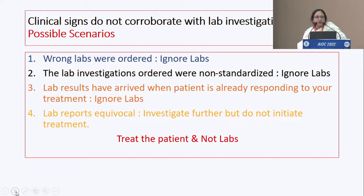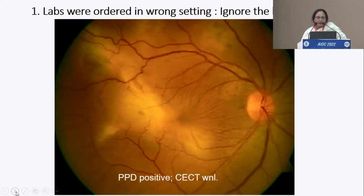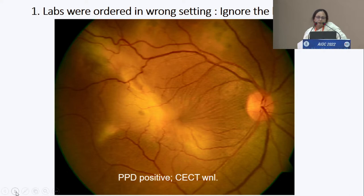The moral of the story is: treat the patient and not the labs. The first example is the labs were ordered in the wrong setting. This is a patient who first presented to colleagues in private practice, and tests for TB were ordered.